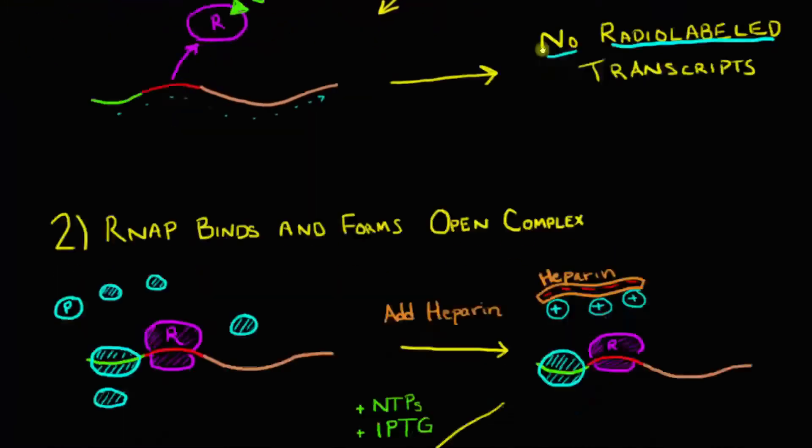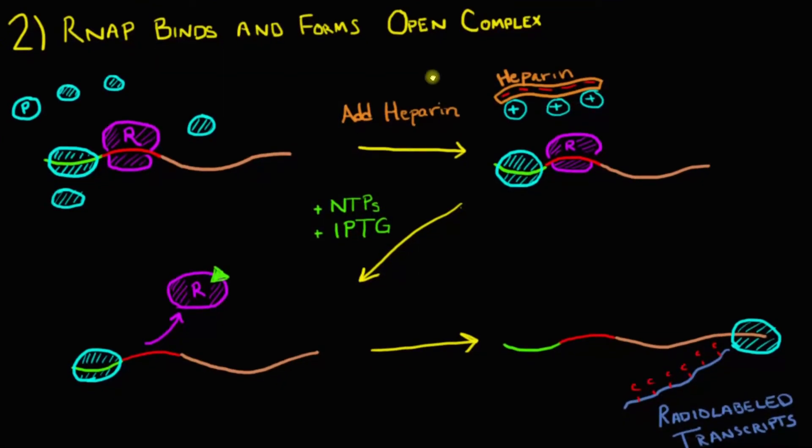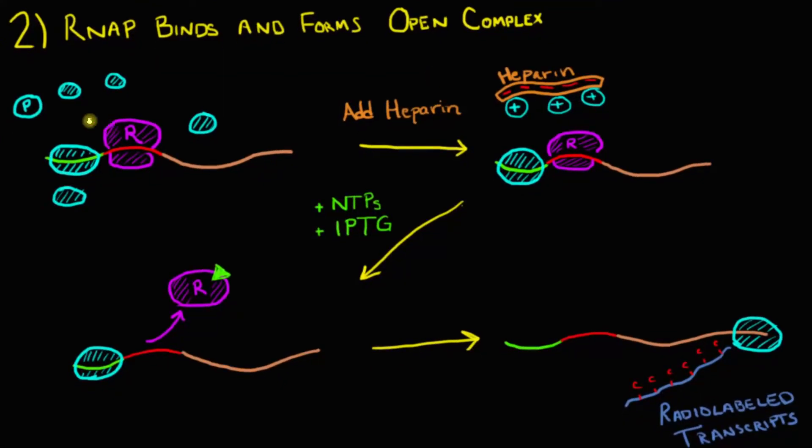The other possibility is that RNA polymerase does bind to the promoter, and indeed it forms an open complex. In this situation, we still have RNA polymerase floating around out here, but some of it will have bound to the promoter. Now when we add in heparin, we'll block all these free-floating RNA polymerases from binding, but you can't actually rip away this RNA polymerase that is already bound, because it has formed an open complex. And open complexes are very stable. It's very difficult to rip this away once it's actually melted the DNA.